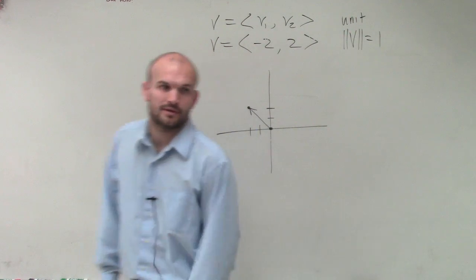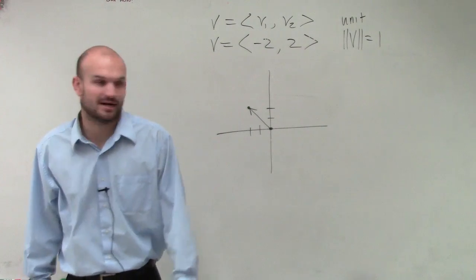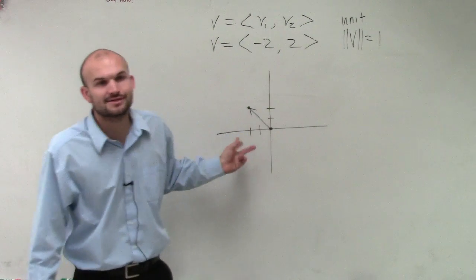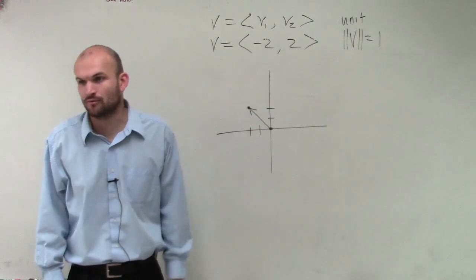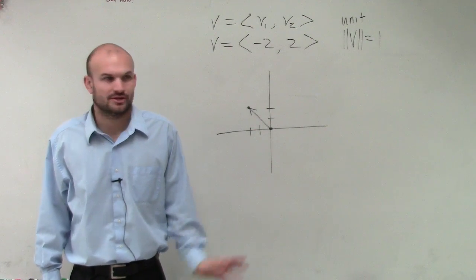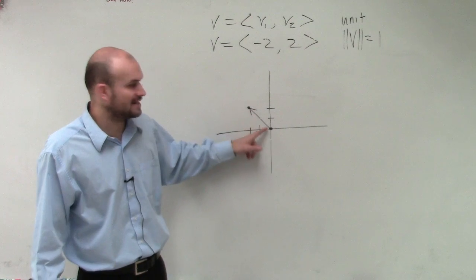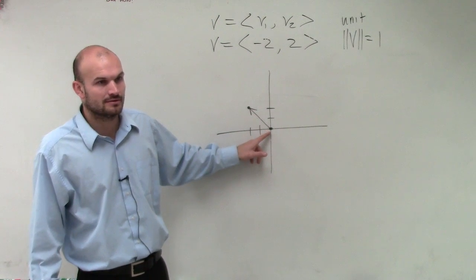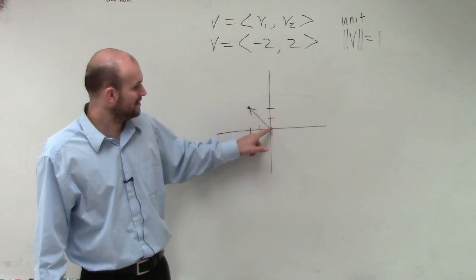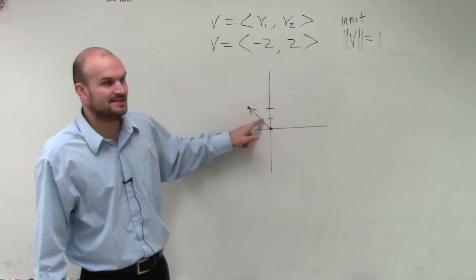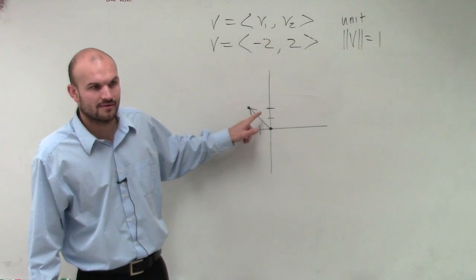Now, we can go and find the magnitude of v. But I'm pretty sure, is this a unit vector? Is the magnitude, the distance of this vector 1? Can you guys look at this? From here to here, is that a distance of 1? Or a distance of 2? No, there's no way. 1 is up here, 1 is over there. We know that's at least double the length.